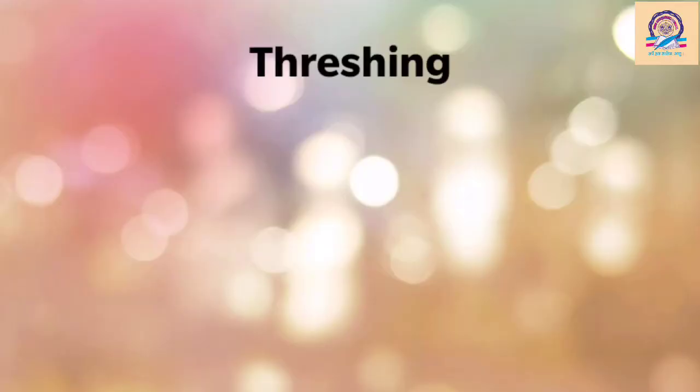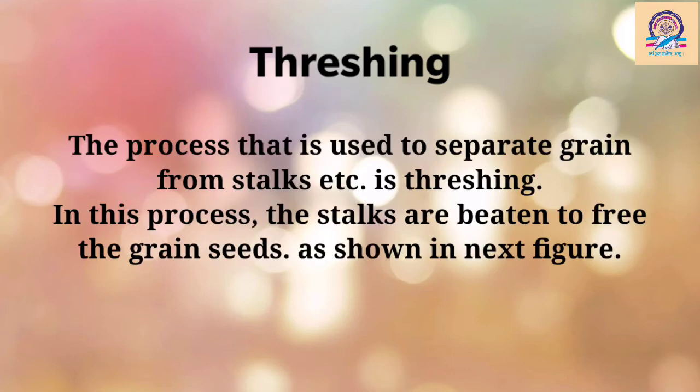The next topic is threshing. Let's see what threshing is. Threshing is the process used to separate grains from the stalk. Can anyone tell what is a stalk? You can pause the video and write your answer in the comment box. The stalk is nothing but the stem of the plant. In this process, stalks are beaten to free the grain seeds, as you will see in the next figure. To obtain the grain seeds, we have to beat the stalks so that the impurities and the seeds are separated.